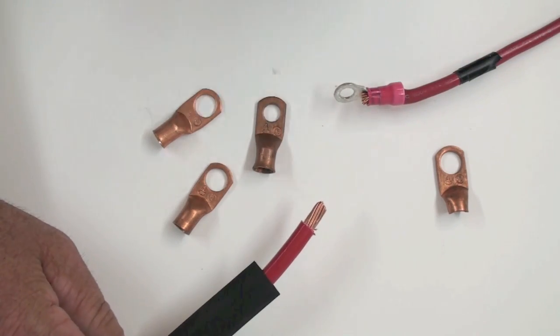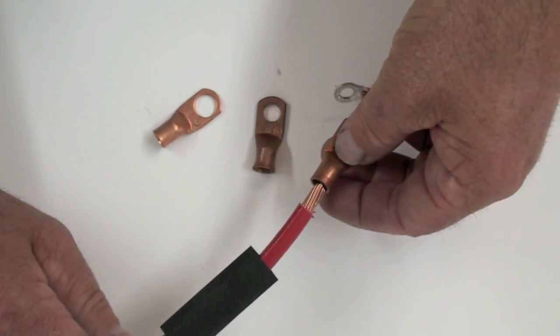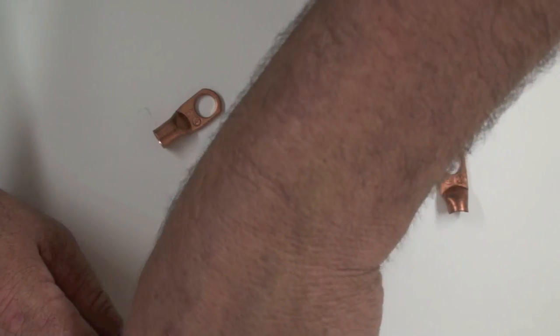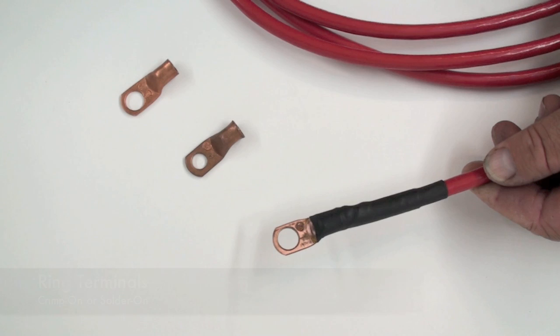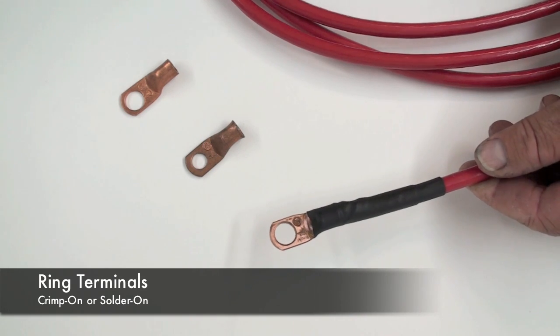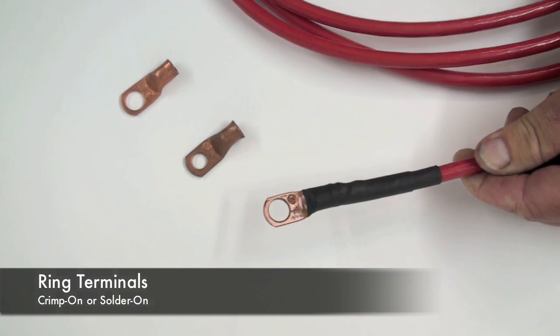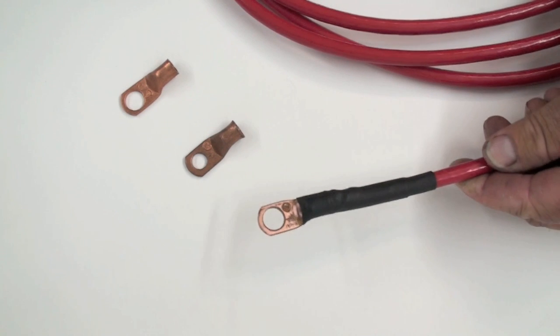For a 4 gauge, I would typically solder this connection and use a piece of heat shrink tubing to finalize that connection. Here is the finished soldered connection, a 4 gauge ring terminal connected to a 4 gauge wire.